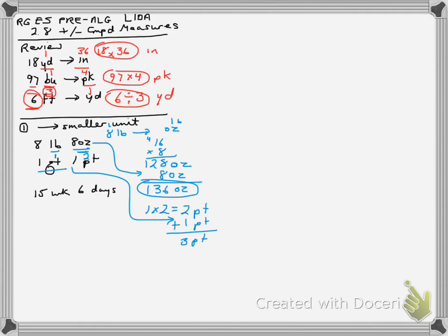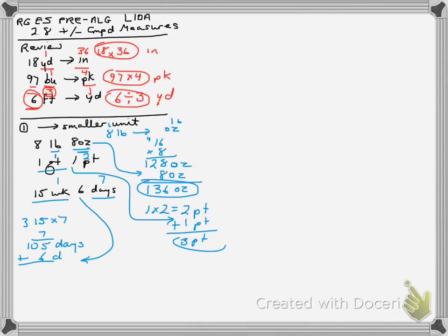The last example here would be weeks to days. Again, we're going to the smaller unit of measurement, which is days. There are 7 days in 1 week, so I take my 15 weeks and multiply by 7, giving 105 days. It's a 2-part problem, so we then add the additional 6 days for a total of 111 days. That's the first skill.